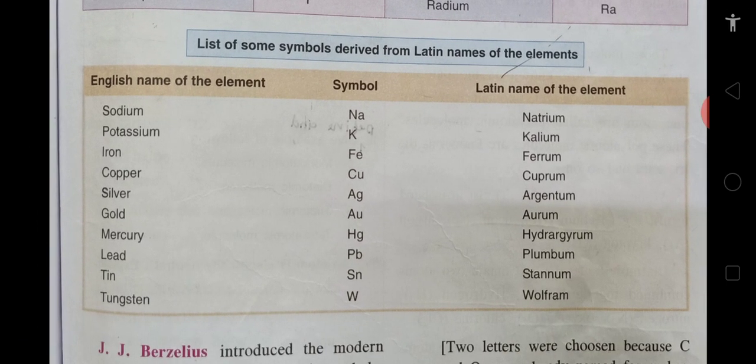There are some symbols derived from the Latin names of elements. Although we name them with English names, their symbols came from Latin. For sodium, the symbol is Na because its Latin name is Natrium. For potassium the symbol is K from its Latin name Kalium. Iron's symbol Fe comes from its Latin name Ferrum. Copper's symbol Cu comes from Cuprum. Silver Ag from Argentum, gold Au from Aurum, mercury Hg from Hydrargyrum, lead Pb from Plumbum, tin Sn from Stannum, and tungsten W from Wolfram.